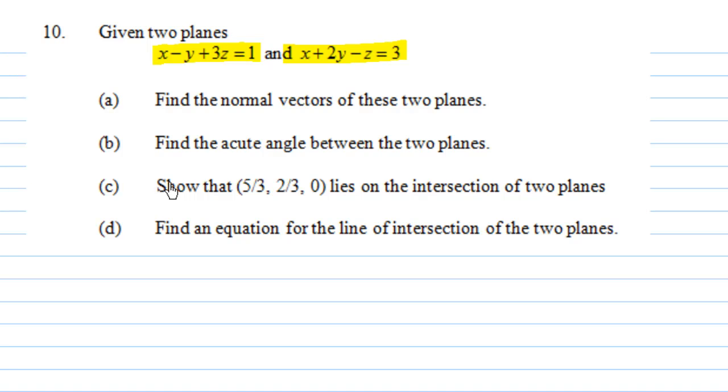Part C, we are going to show that (5/3, 2/3, 0) lies on the intersection of these two planes. Then we are going to find the equation of the line of intersection of the two planes. First let's show that (5/3, 2/3, 0) lies on the intersection.